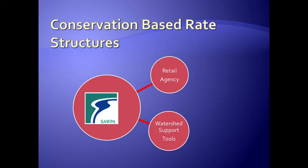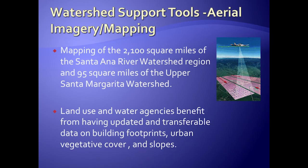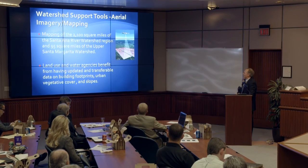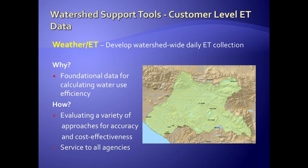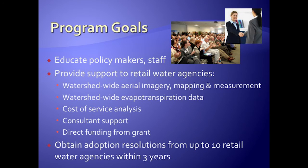In addition to direct funding support to your agency, we also have a number of watershed support tools. The aerial mapping is a key part of your water budget-based rates — we're doing this now with grant dollars and provide it directly to your agency. We're mapping over 2,100 square miles of urban and agricultural areas throughout the watershed. The ET information — knowing temperature, humidity, and rainfall — is a foundational piece of data you need, and there are automated systems to collect that using satellite information or CIMIS stations.